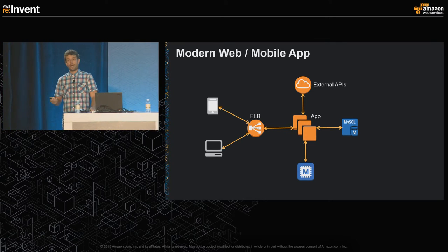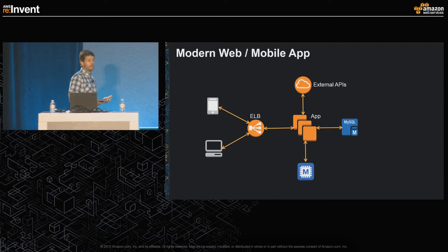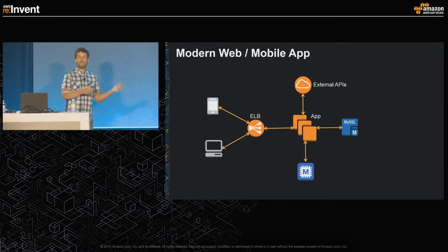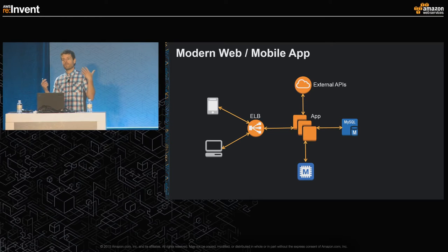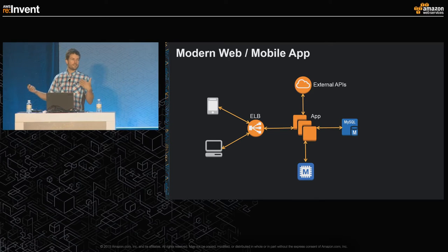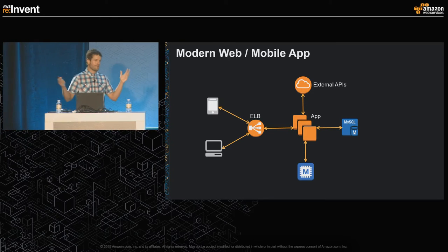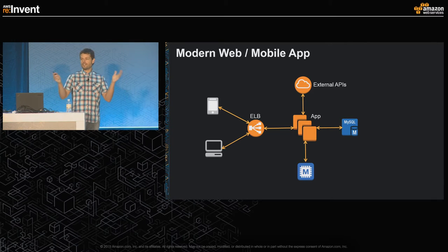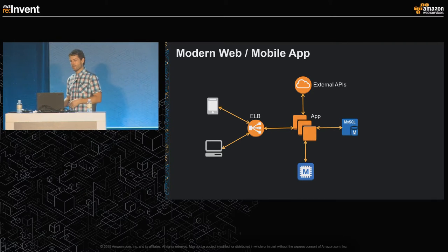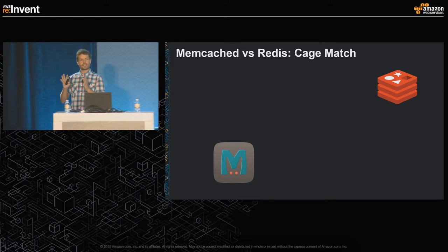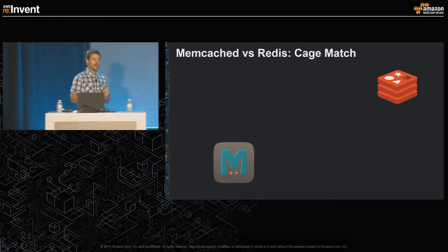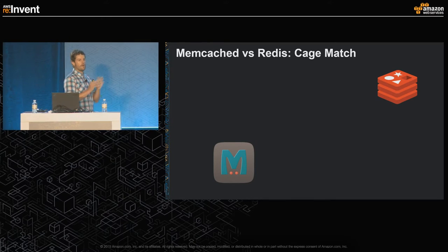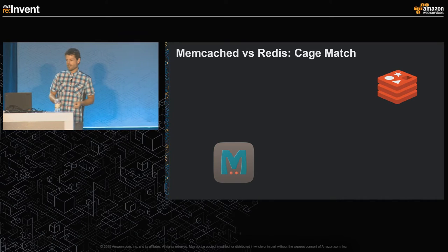One of the big questions that comes up when people are evaluating ElastiCache is which one should they choose: Memcache or Redis? If you Google online, you can find a ton of flame wars with people supporting one or the other. But I think it boils down to just a couple of salient features, and hopefully I can help disentangle that a little bit.